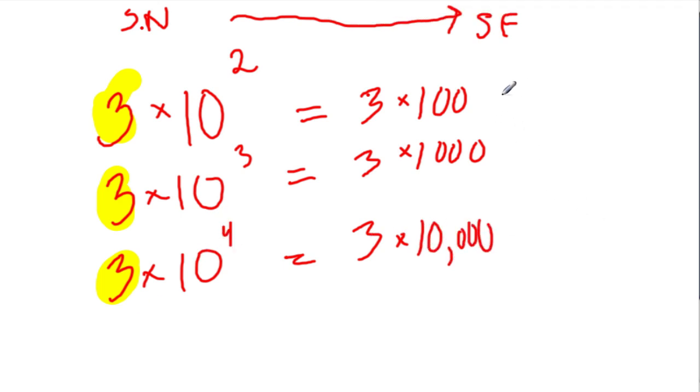Going back and simplifying, 3 times 100 is 300. 3 times 1,000 is 3,000. And 3 times 10,000 is 30,000. So these are the numbers in standard form.